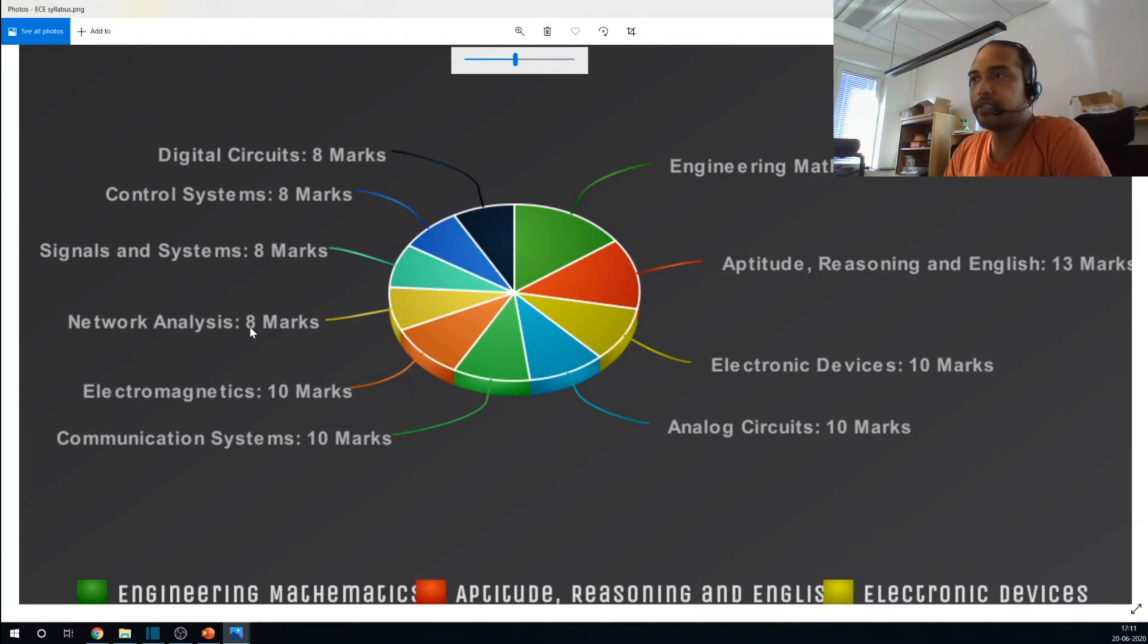Then you have the basic electronic and communication subjects which is network analysis. They appear for 8 marks. Signals and systems, again they appear for 8 marks. Control systems, 8 marks and digital circuits, 8 marks. However, this weightage is not consistent. Sometimes, this weightage changes. In some question papers, there are more questions from one of these subjects compared to the other.